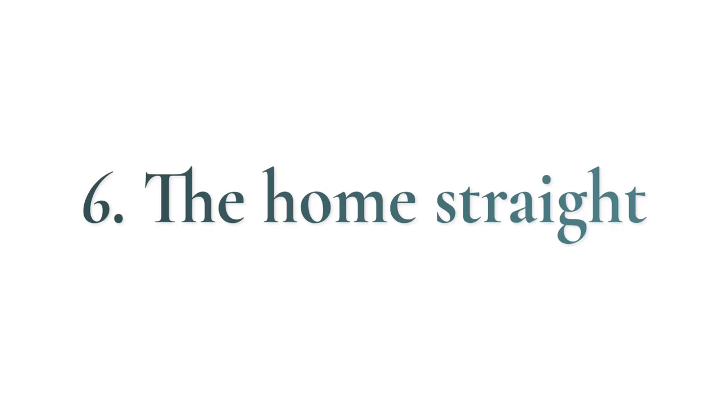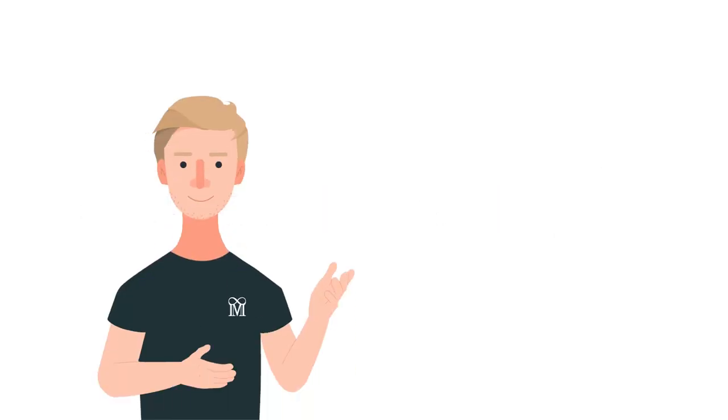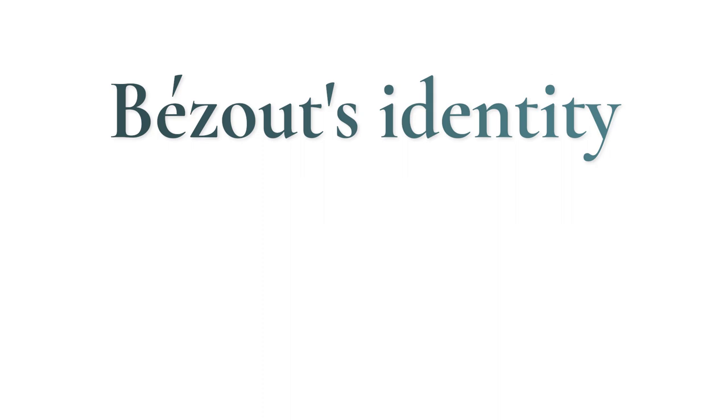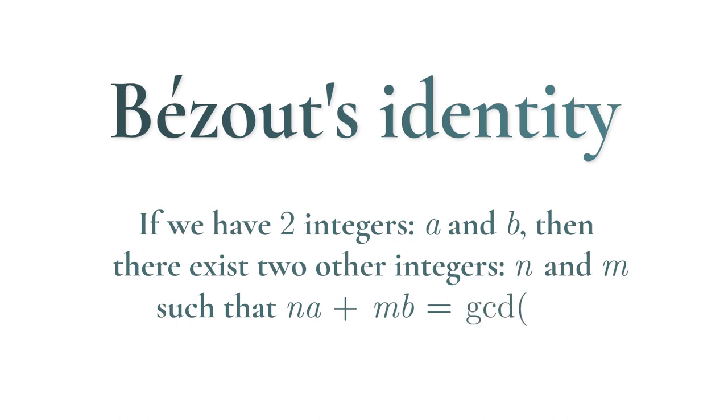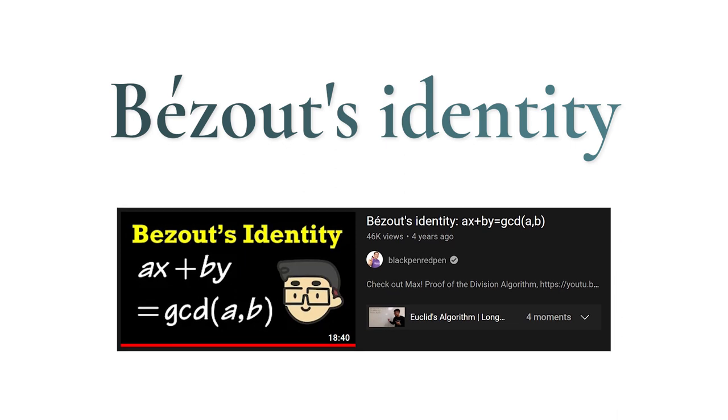The core of the proof I'm going to present to you is this very basic and fundamental theorem of number theory, which is Bezout's identity. It states that if we have two integers, a and b, then there exists two other integers n and m such that n·a plus m·b is equal to greatest common divisor of a and b. If you don't know it, please check out BlackPen RedPen's video about it and go further into the proof.